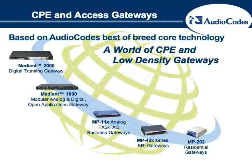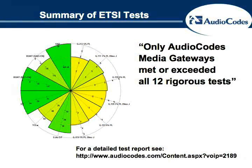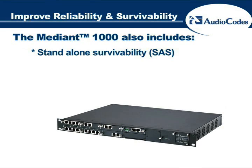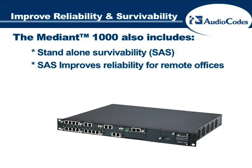The Mediant 1000 is based on AudioCodes' best-of-breed core technology that delivers superior voice quality, even in difficult and less-than-perfect network conditions. In fact, only AudioCodes' media gateways were successful in passing all 12 of the rigorous tests in the last ETSI speech quality test event. If you want to improve reliability and survivability, the Mediant 1000 also includes Standalone Survivability features, or SAS. These enable the Mediant 1000 to continue to provide local phone service when network connectivity fails — a key capability for remote offices, small offices, or applications that depend on WAN connectivity or SIP trunking.